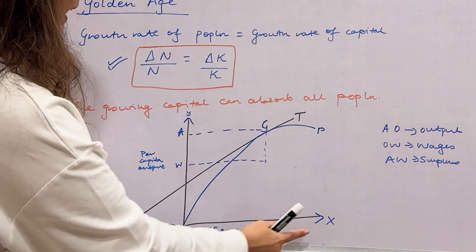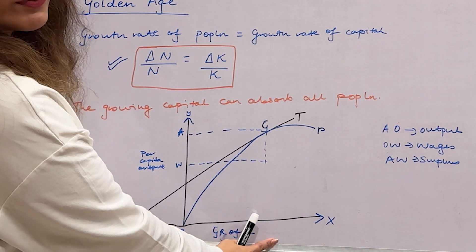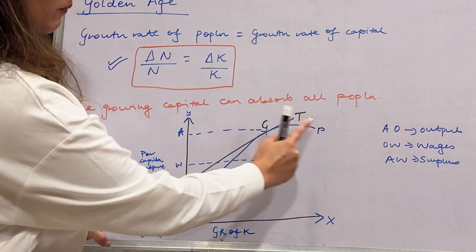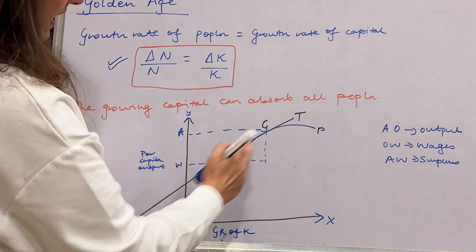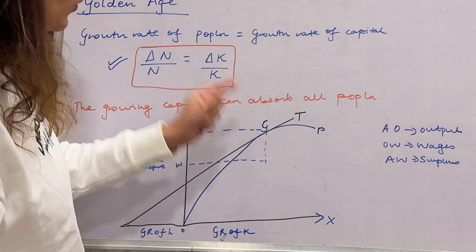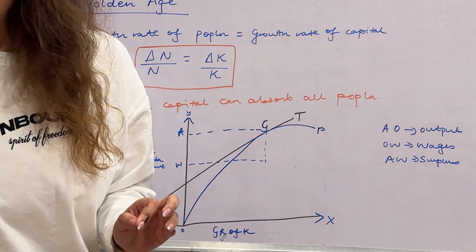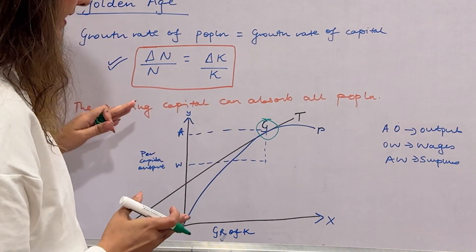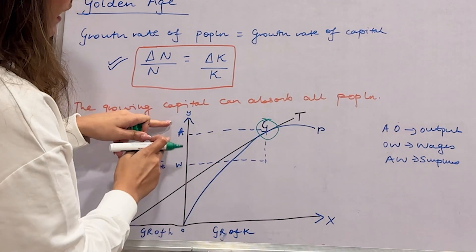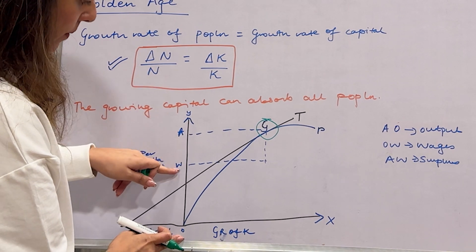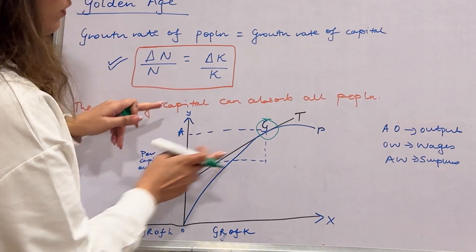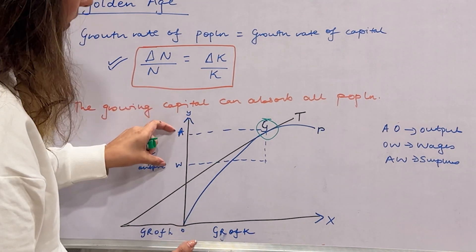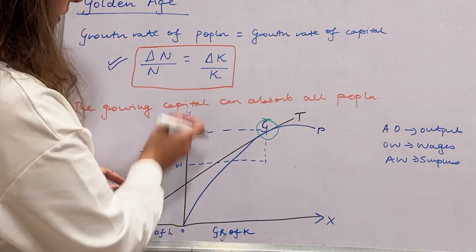Diagrammatically, on the x-axis we have growth rate of labor and growth rate of capital, and per capita output on the y-axis. From the origin we have a production function curve P, and T is the tangent. The point at which this tangent coincides with the production function is the Golden Age — this is the G point, the golden age point. At the Golden Age, AO is the amount of output, OW is the amount of wages, and AW is our surplus — the amount being saved — while OW is what is spent on wages.